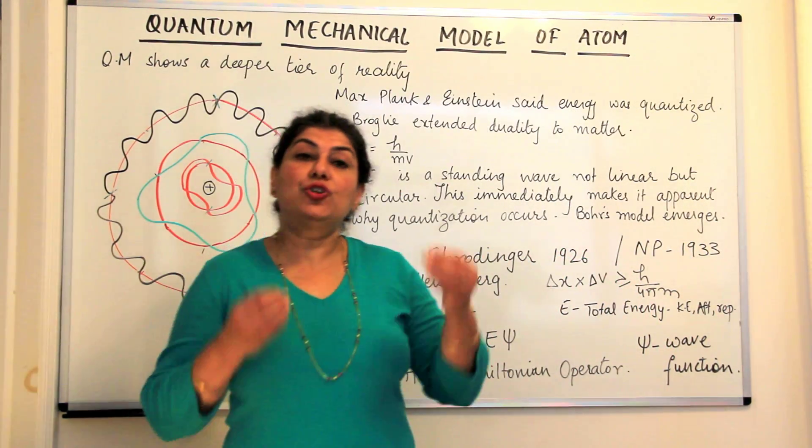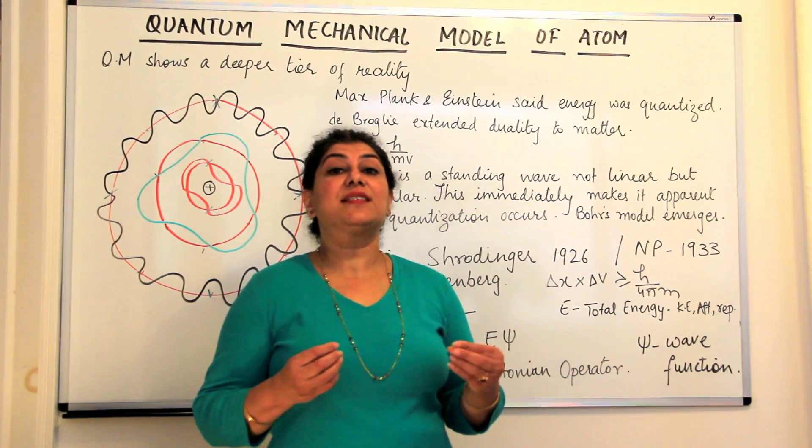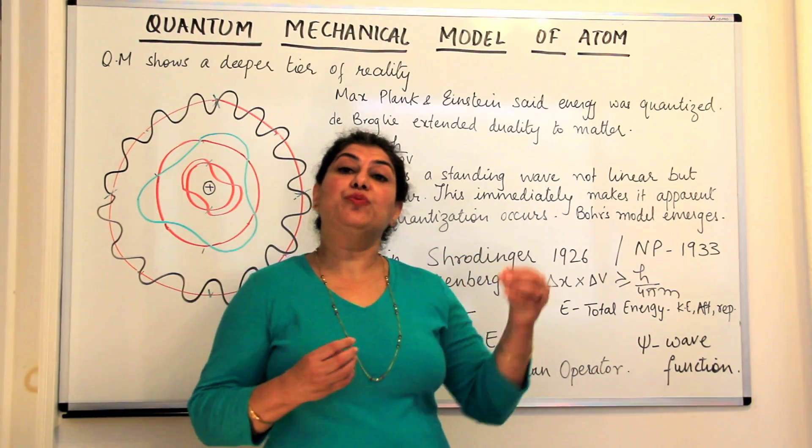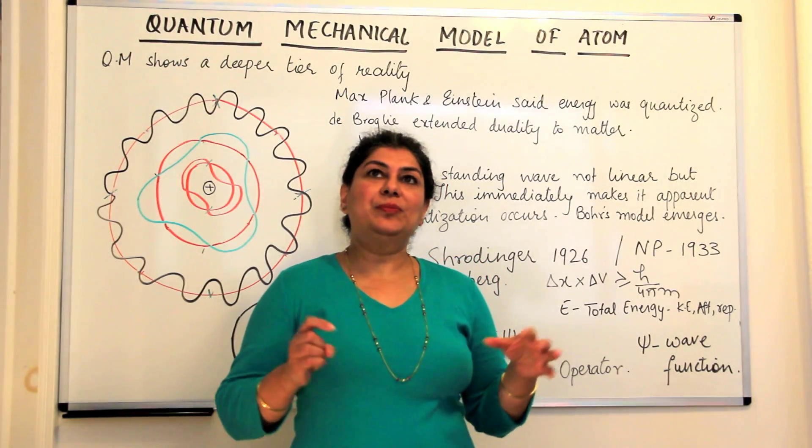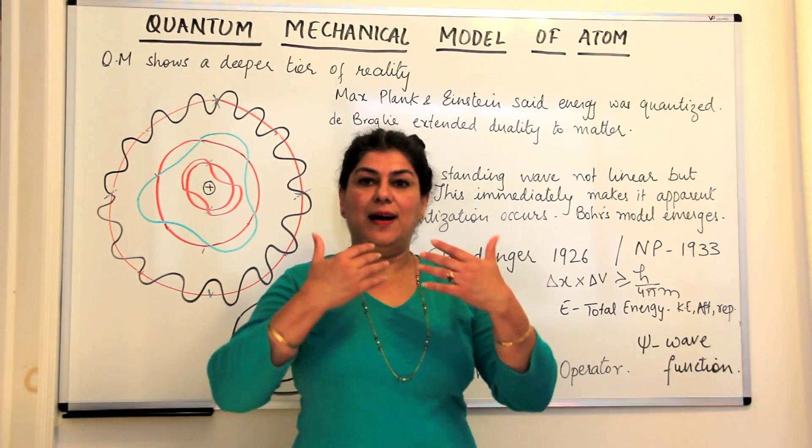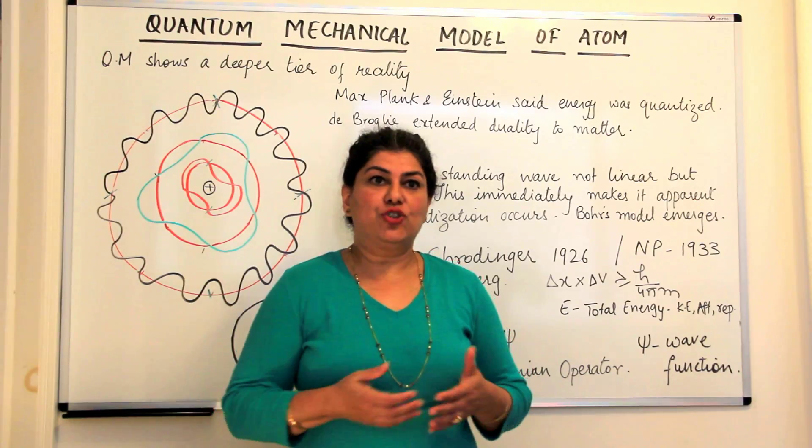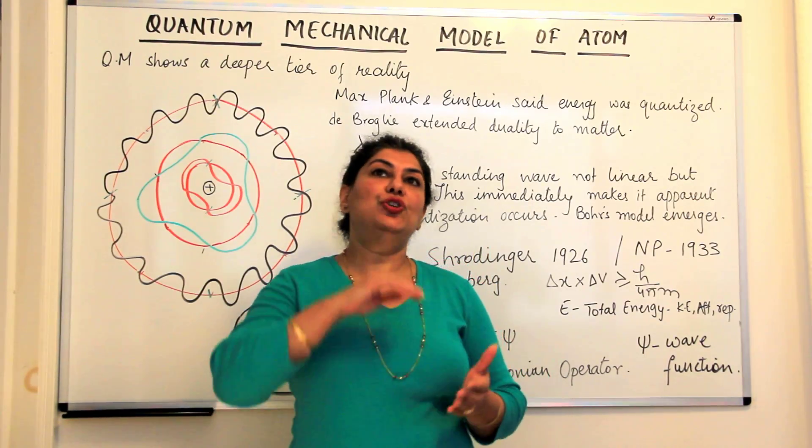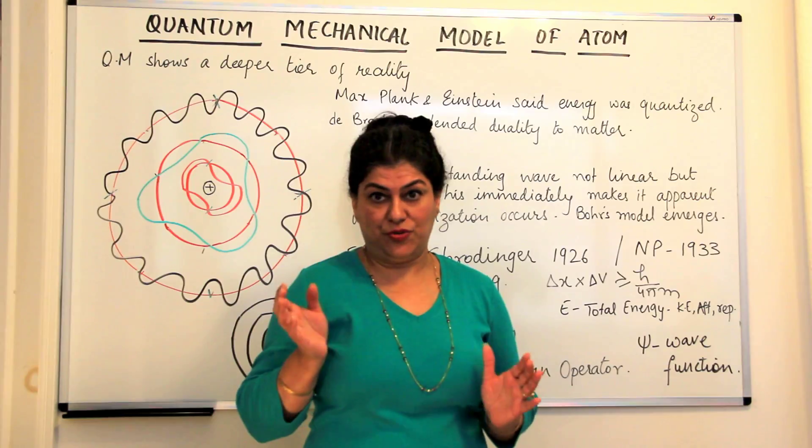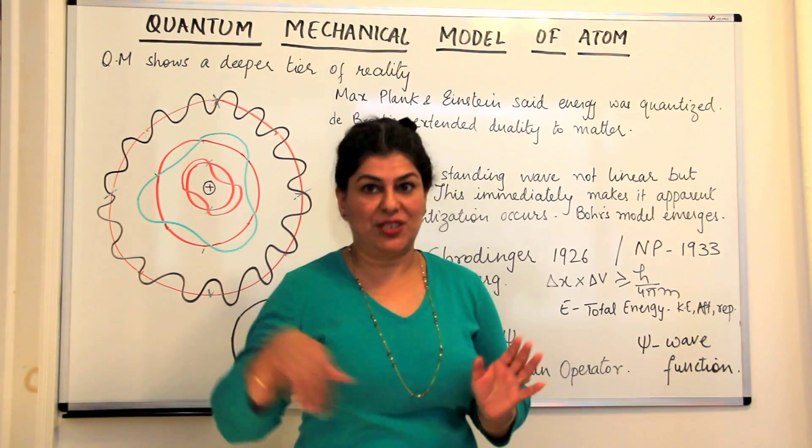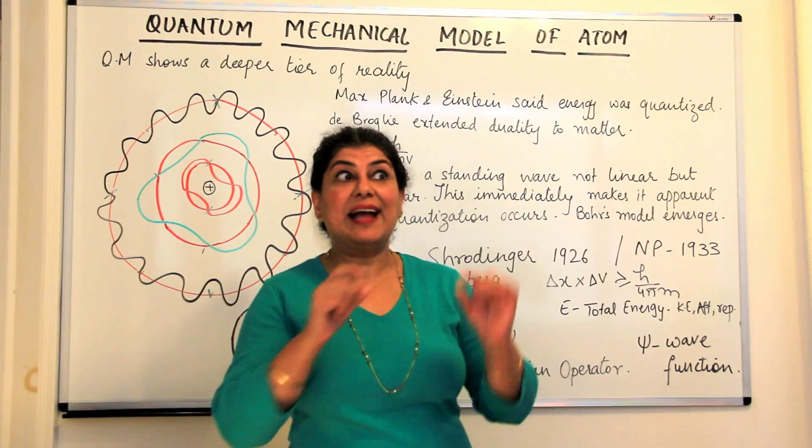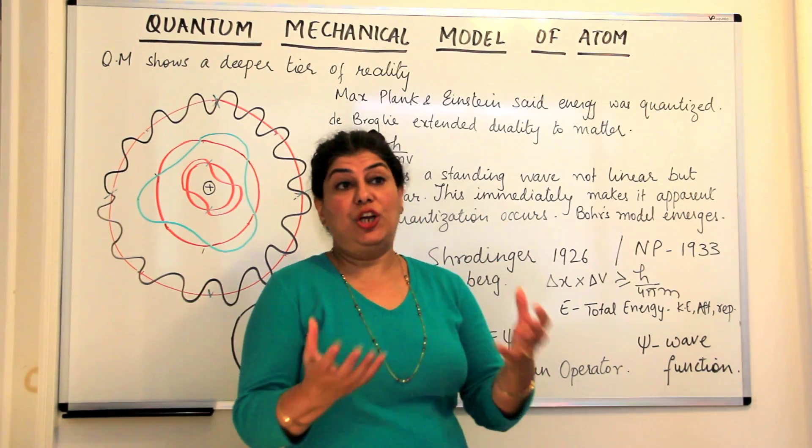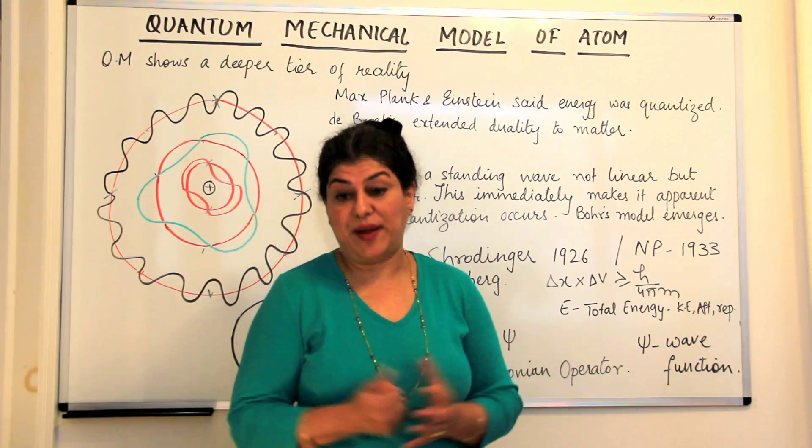The solution to the Schrödinger wave equation gave us certain numbers which were known as the quantum numbers. It was like, you know, this is where I live. So if you want to know my address, you should know the name of this country where I stay, the name of the city, the name of the street, the name of the lane, and the number of my house in order to know where I am.